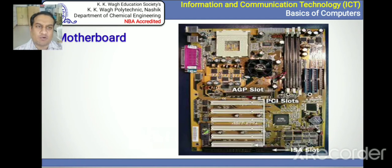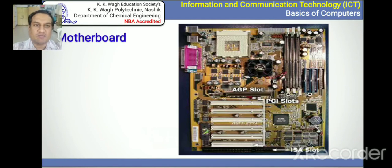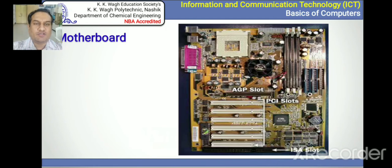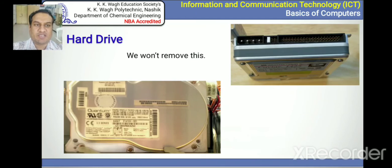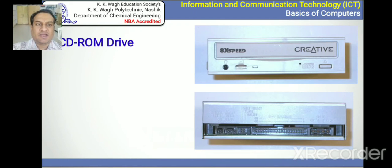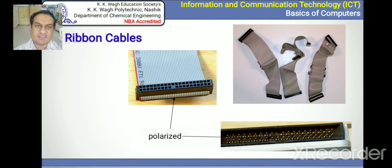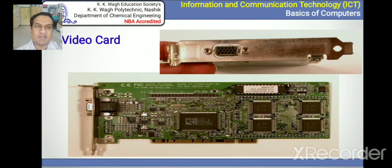Looking at the motherboard, we can observe its elements. AGP slots and PCI slots are provided on it. The RAM — Random Access Memory — is for short-time use. There is also the hard drive, CD drives, and ribbon cables through which data is transmitted. This is the video card.